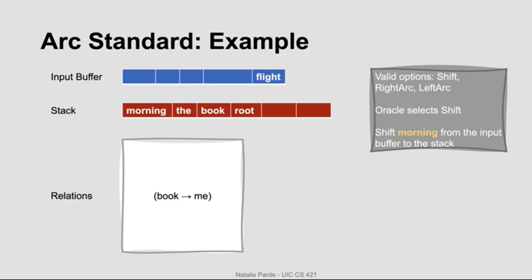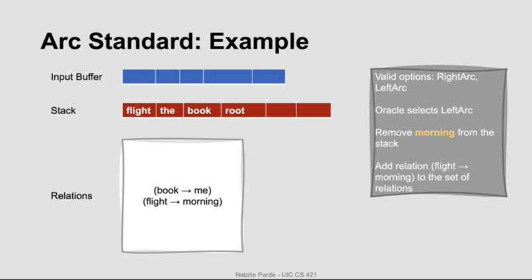The oracle decides to perform another shift, so we shift 'morning' from the input buffer to the stack, leaving one word in the input buffer and four elements on the stack. The oracle decides to perform yet another shift, so we shift 'flight' from the input buffer to the stack. At this point the input buffer is empty, so we can't shift anymore. The oracle decides a left ARC would be best. We create a dependency relation between the top two words where the top word is the head and the second word is the dependent, pop the second word, and add the new relation.